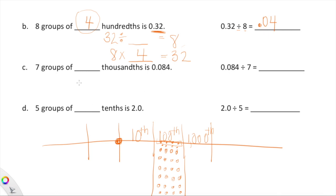Let's look at one more: 84 thousandths divided by 7. We're trying to figure out what goes in our blank. Let's work backwards — we're going to figure out that 7 times something equals 84. Keep in mind we're dealing with different place values, but that's just helpful.